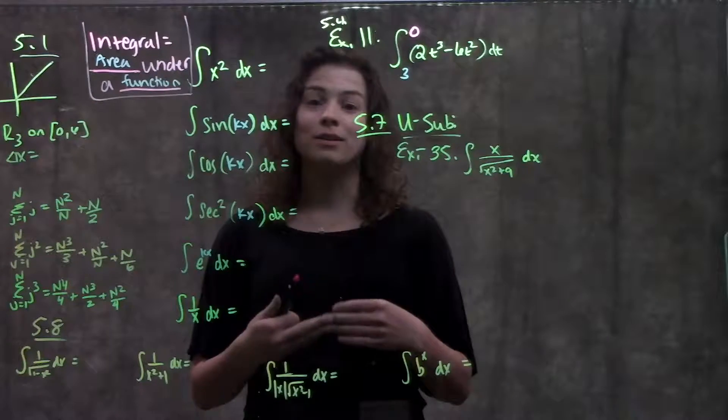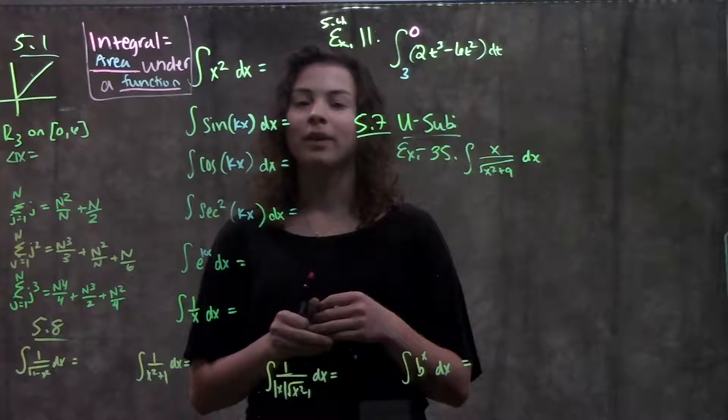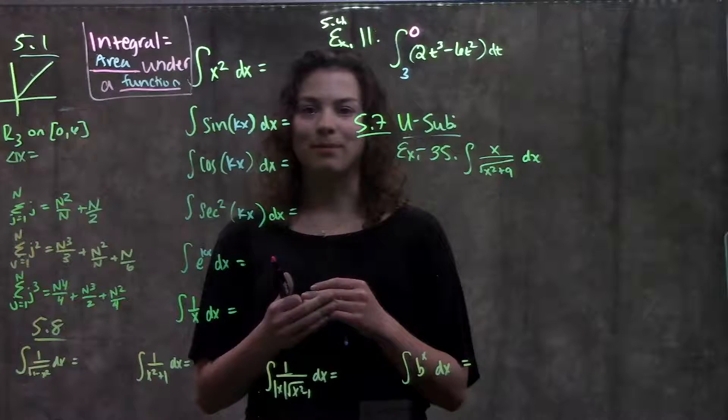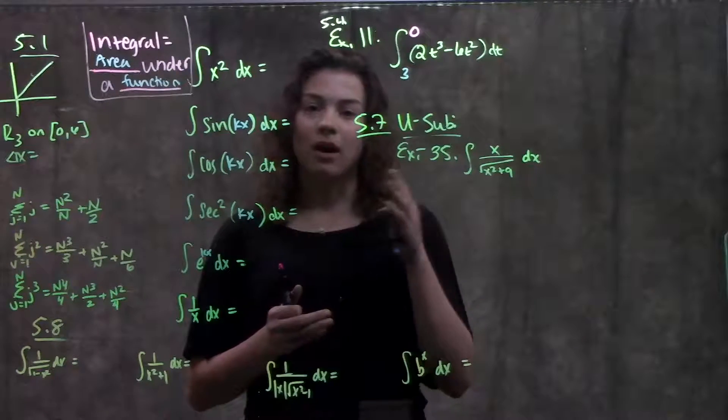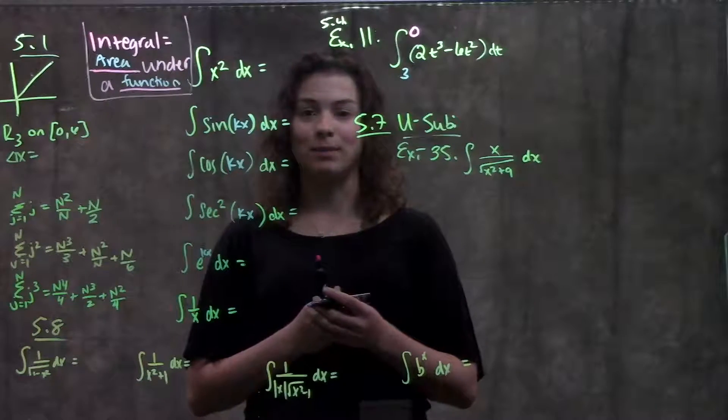In section 5.1, we learned the really long way of how to estimate the area underneath the curve. You remember how we did that - we used these things called Riemann sums. Riemann sums was where we drew rectangles on our curve, found the area of each rectangle, added it together, and used that as an estimate.